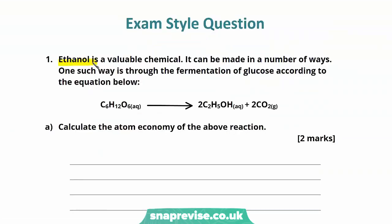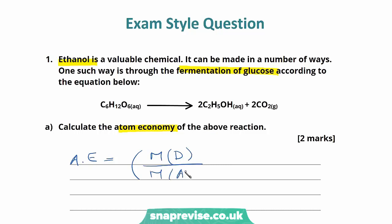Ethanol is a valuable chemical that can be made in a number of ways. One such way is through the fermentation of glucose, according to the equation shown. We have glucose fermenting into ethanol and carbon dioxide. Calculate the atom economy of the above reaction. The first thing to do is write down the equation: atom economy equals the molar mass of the desired product divided by the molar mass of all products, multiplied by 100.